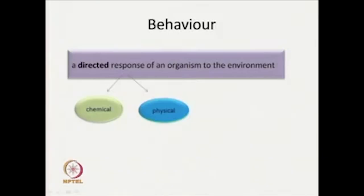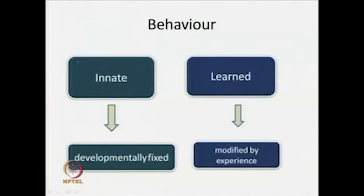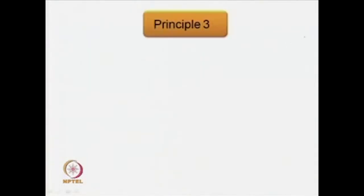Behavior, therefore, is a directed response of an organism to one's environment, and this response is both chemical and physical. Behavior can be divided into innate behavior — behavior that is developmentally fixed — and learned behavior, which is behavior modified by experience. Learned behavior is behavior of information processing machines geared toward survival and reproduction that has to be modified by experience in a changing world. This learning and changing is a job performed by our neural circuitry.